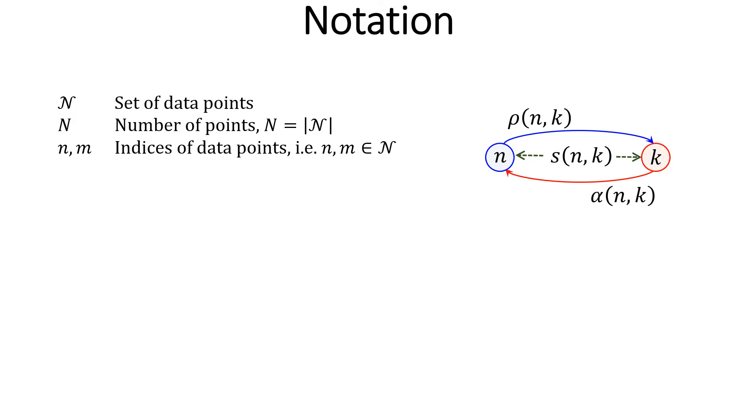Script N is the set of all data points. N is the cardinality of script N, that is, it's the number of data points. And lowercase n and m are indices of data points in N.